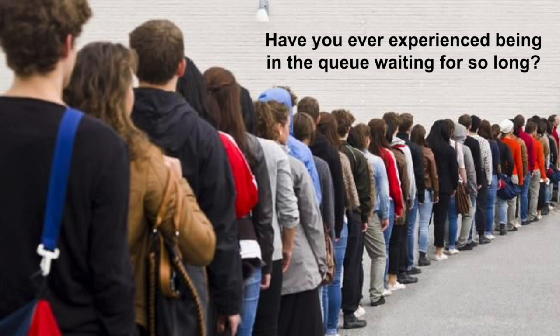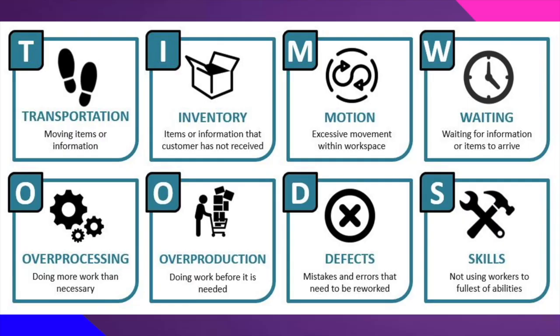Waiting is actually part of the Tim Woods — the eight types of waste. If you recall, these are the wastes that, if we cannot eliminate them 100%, we must at least minimize them: Transportation, Inventory, Motion, Waiting, Over-processing, Over-production, Defects, and non-utilized Skills of workers. Waiting — for information, items, or service to arrive — is one of those wastes we must reduce. That is the purpose of queuing theory.